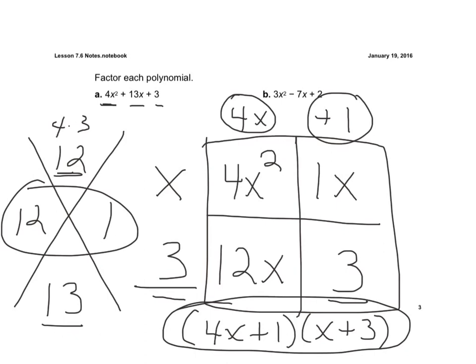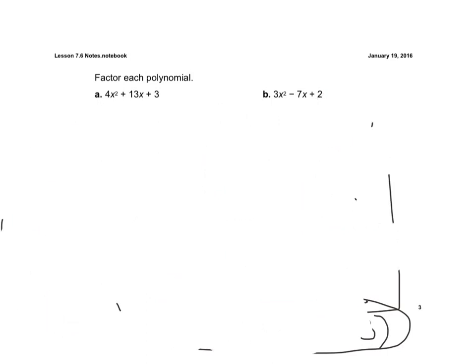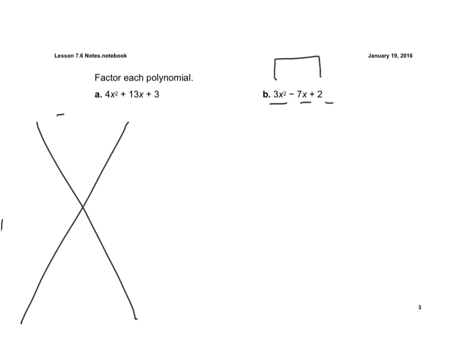So if we look at example B here. Again, we look at this one. The 3 is not common in all three terms. So again, it tells me I'm going to use the Xbox. So I have to take the 3 times the 2. And that gives me 6. And now the negative 7 goes down here. And now what factors of a positive 6 add up to a negative 7?